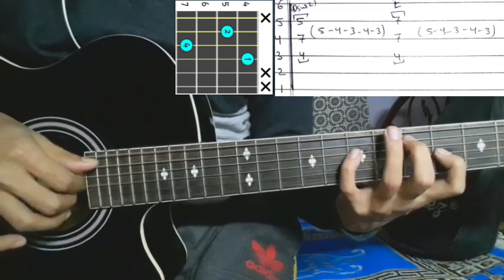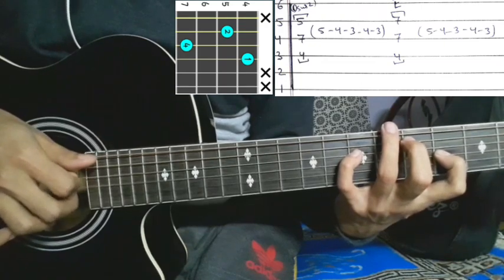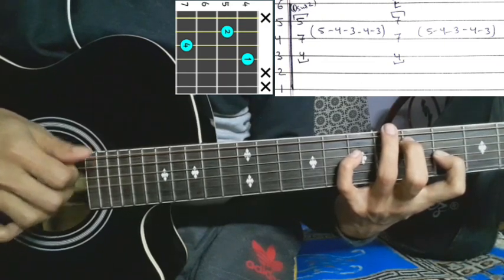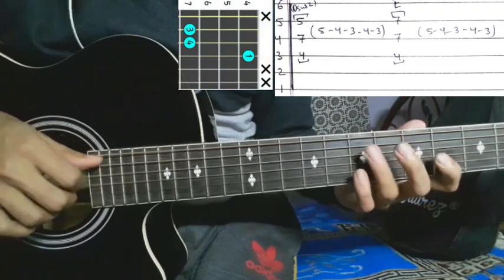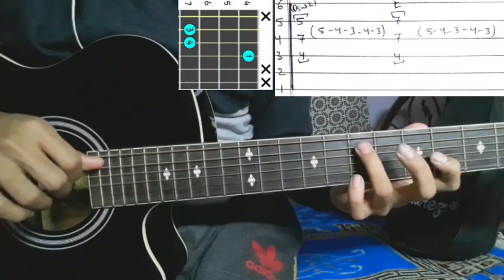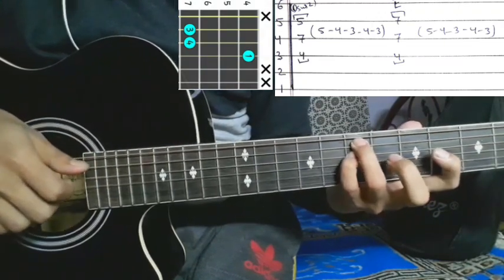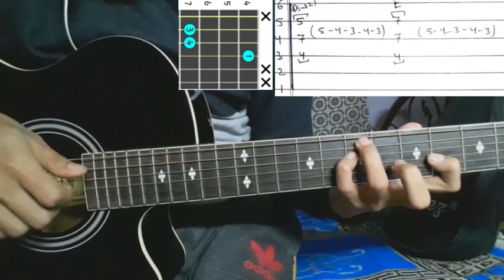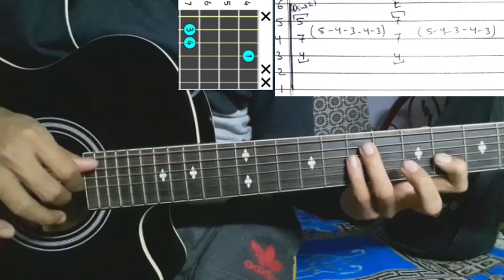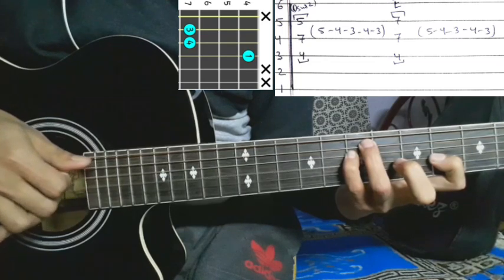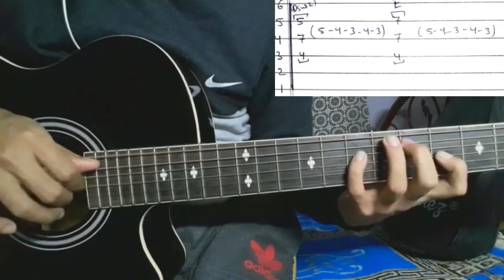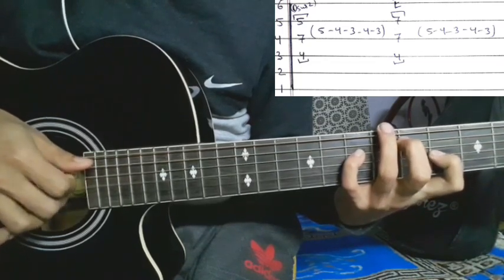Then you move the finger position: fifth string seven, fourth string seven, third string fourth fret. Same plucking: five-four-three-four-three. Keep repeating this pattern: five-four-three-four-three. That's the complete plucking lesson.